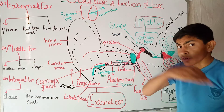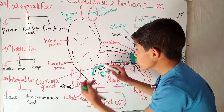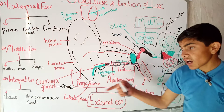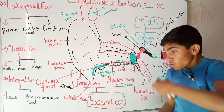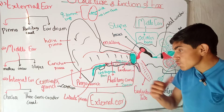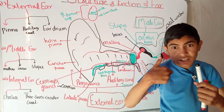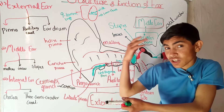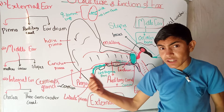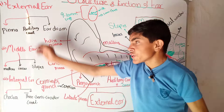The ceruminous gland secretes cerumen (ear wax). Sound coming from outside may carry dust particles. The ceruminous gland in the outer auditory canal secretes cerumen which captures the dust particles coming with the sound waves. This way dust particles are retained in the external ear, which is why there is often dust collected in our ears.